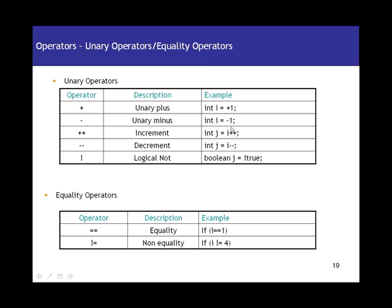If the value of i is 4 and you assign j equals i plus-plus, it first assigns the value of i to j and then increments i. So j will be 4. But with plus-plus i, it first increments i and then assigns the value to j, so j will be 5. That is the difference between i plus-plus and plus-plus i. Similarly, we have the decrement operator with i minus-minus and minus-minus i.